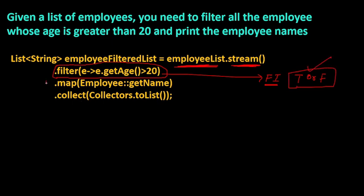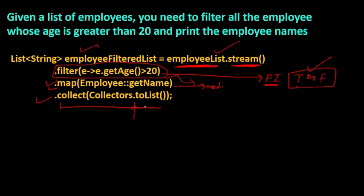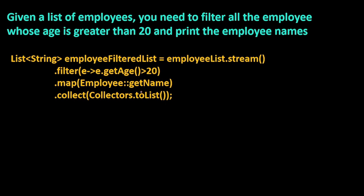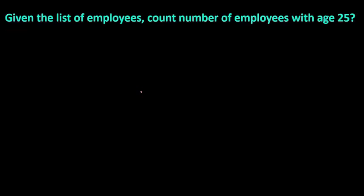The map operation is used when you want to perform some calculation or operation on each object in your list — in simple words, when you want a modification. If you don't have this background knowledge, I have a Java 8 playlist on my channel where all these things are covered in detail. Go and watch that first.